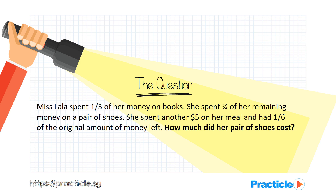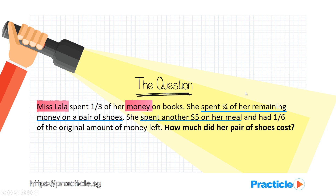Now it's time to analyse the question again. How many people are being mentioned in this question? One person — Miss Lala. And there's also only one item involved, which is money. The problem sum goes on to talk about how Miss Lala spends her money, first on books, then on a pair of shoes, and then on her meal. From the phrase 'of her remaining money', we know that we are being tested on the remainder concept once again.